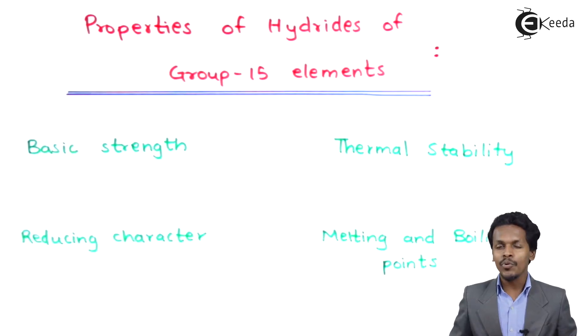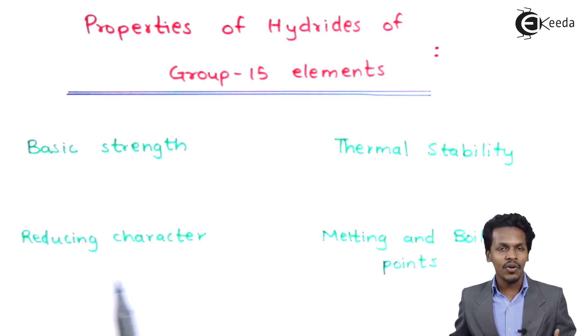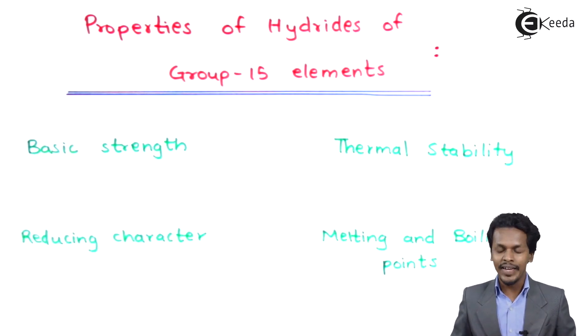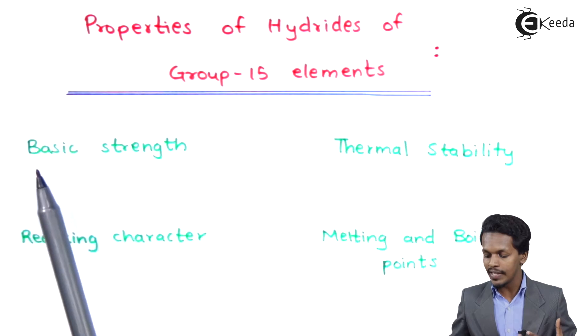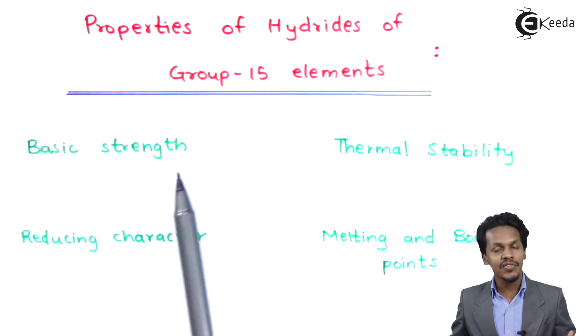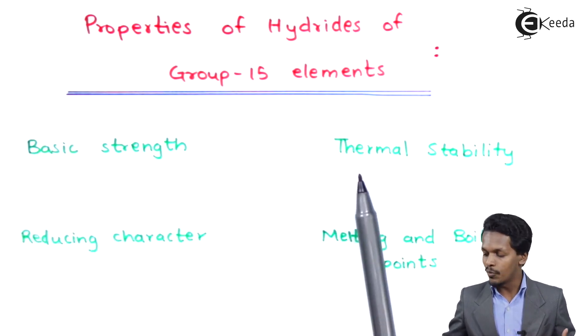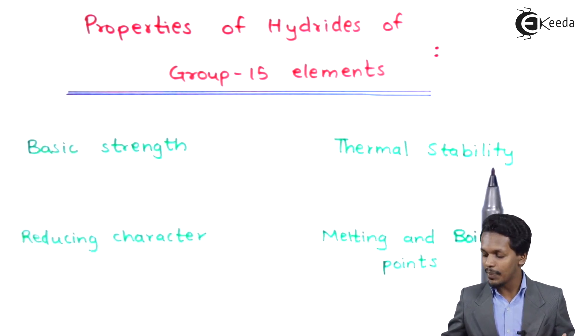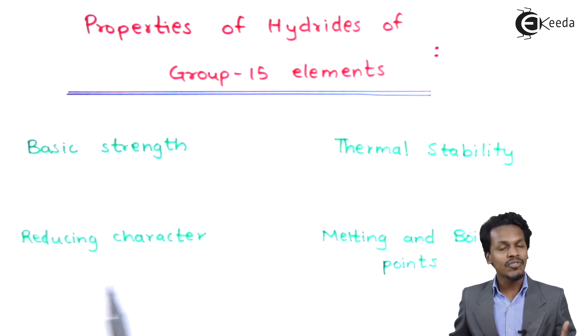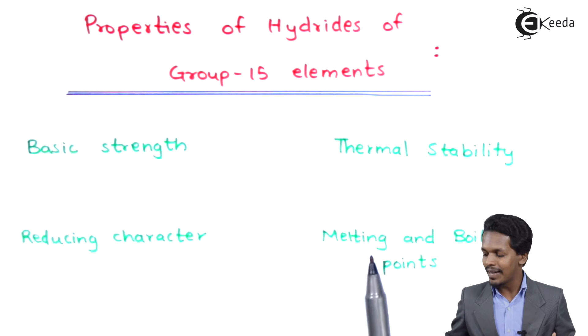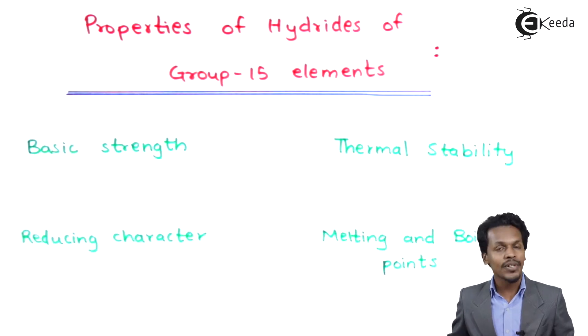In this topic I am going to talk about the properties of the hydrides of the group 15 elements. The properties I will cover are: basic strength, thermal stability, reducing character, as well as melting and boiling points.